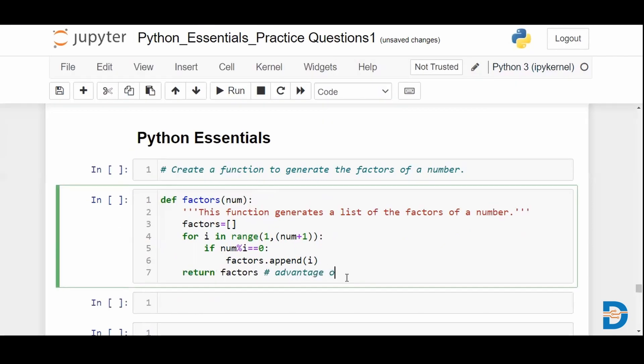This has an advantage over the print function. What is the advantage? You can assign this to a variable directly, and the variable will now be that list of factors which we are returning.